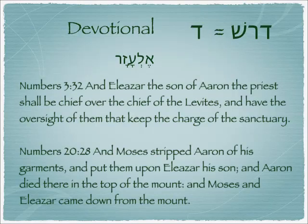When we come to the Drash, where we search and look for the personal application, we find Eleazar — God is our help. Numbers 3:32: 'And Eleazar the son of Aaron the priest shall be chief over the chief of the Levites and have oversight of them that keep charge of the sanctuary.' Due to the death of Nadav and Avihu, he becomes the chief over the priests. He's taking Aaron's place. He's not the firstborn — he's the third — but he does inherit the position.